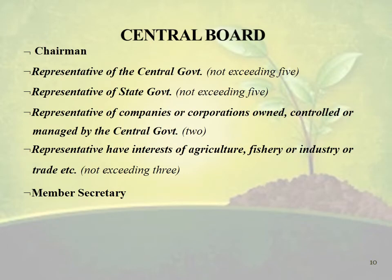Then we can see the Central Board and the State Board and who are the members of the Central Board. The first member is the Chairman, then the representative of the Central Government — it should not exceed 5. The representative of State Government — it should not exceed 5. Representative of companies or corporations owned, controlled or managed by the Central Government — it should be minimum of 2. The representative with interest of agriculture, fishery or industry or trade — it should not exceed 3. And the member secretary.